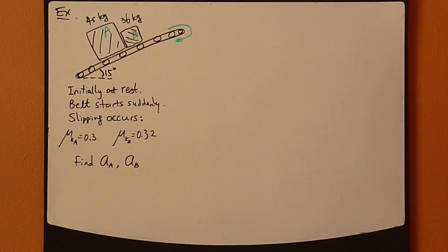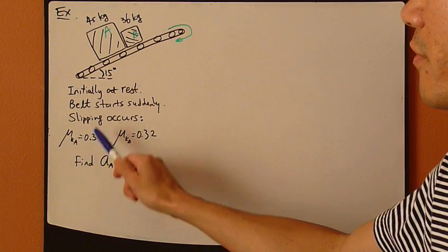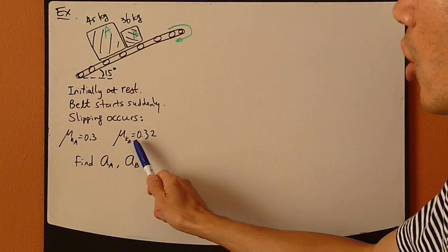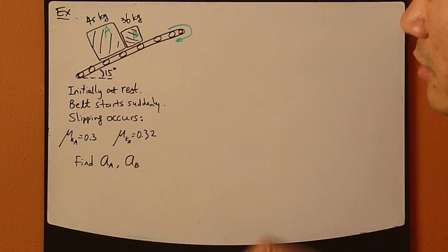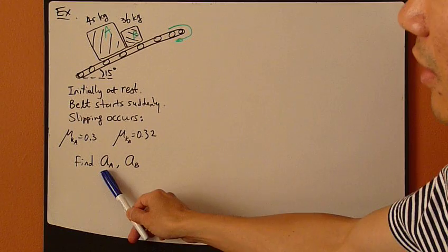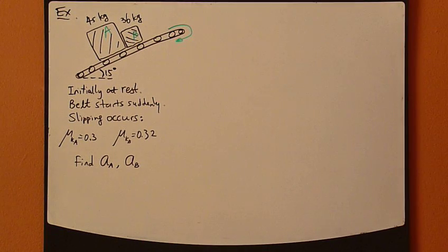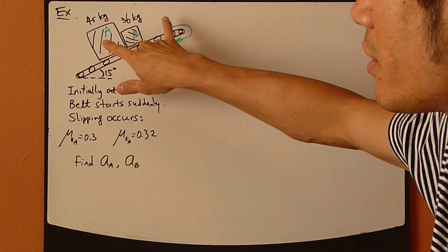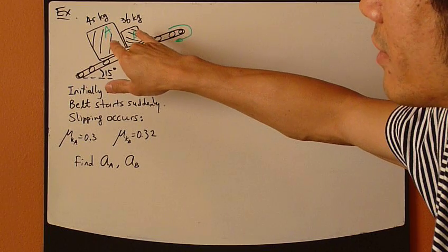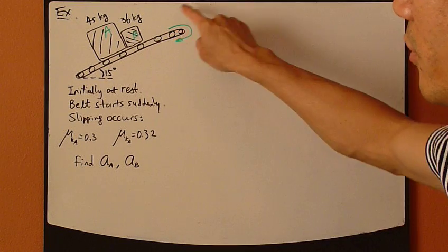Now, looking at this problem right here, we have two particles in contact with each other. Each of them have different mass and different coefficient of kinetic friction between them and the conveyor belt. Now, you're asked to find accelerations of A and B individually. You might ask, are they different, and also, are they going to separate, or are they going to stick together after the conveyor belt has started?